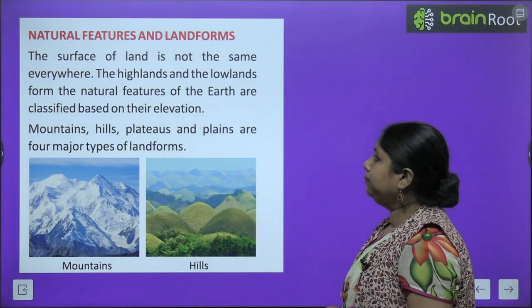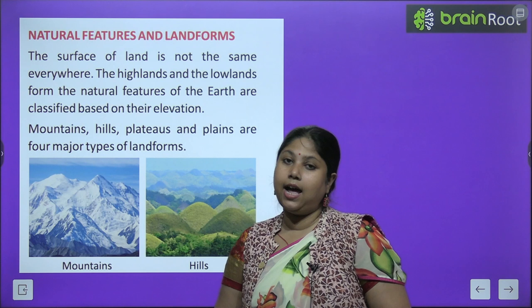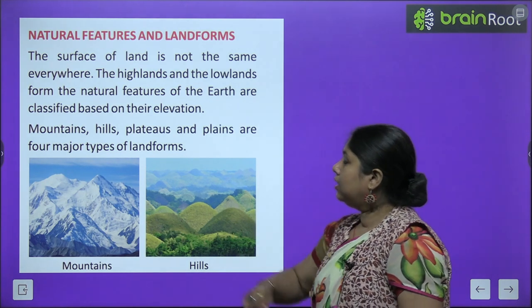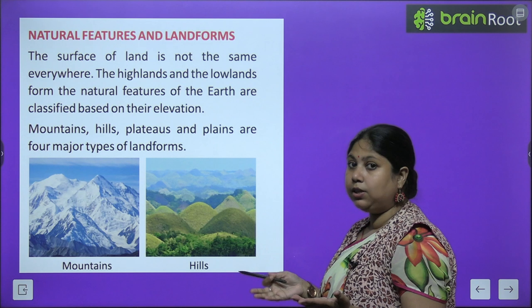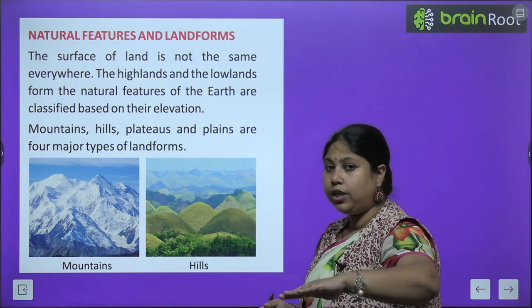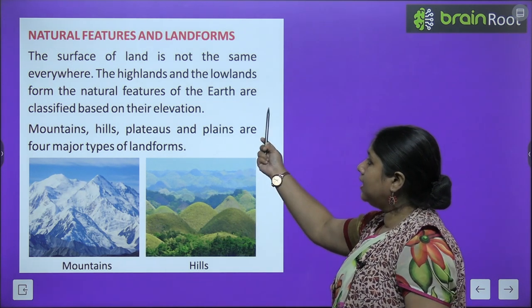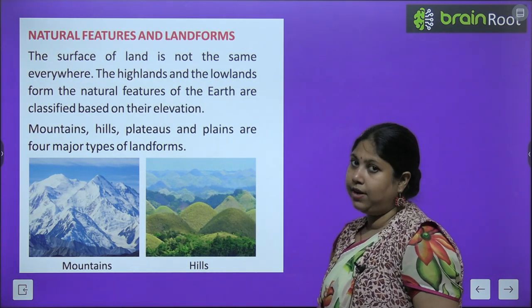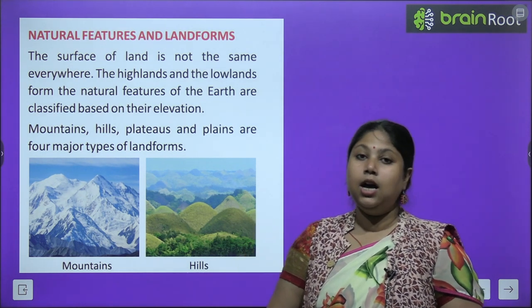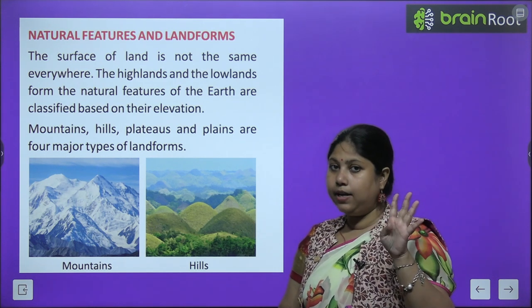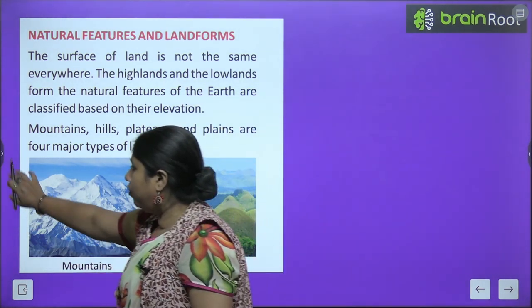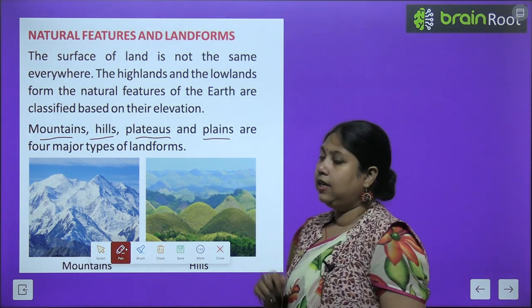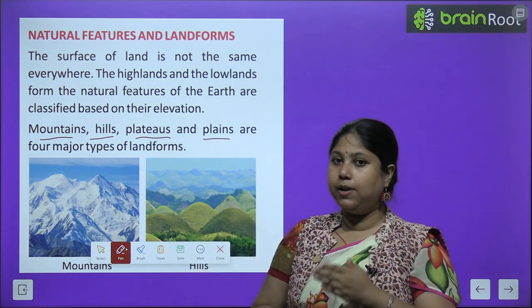Let's study about the natural features and landforms of earth — earth ke different-different natural features aur landforms ke baare mein hum padhte hain. The surface of land is not the same everywhere — har jagah earth bilkul same nahi hai. Kahin pe oocha hai, kahin pe neecha hai, kahin pe smooth hai, kahin pe ubadhkha par hai. The highlands and the lowlands form the natural features of earth. They are classified on the basis of elevation — jis tarah se oocha ya neecha hai, unke basis pe hum unhein alag-alag naam dete hain. The 4 major classifications are mountains — yaani pahad — hills, then plateaus and plains. Yeh 4 major landforms hain.